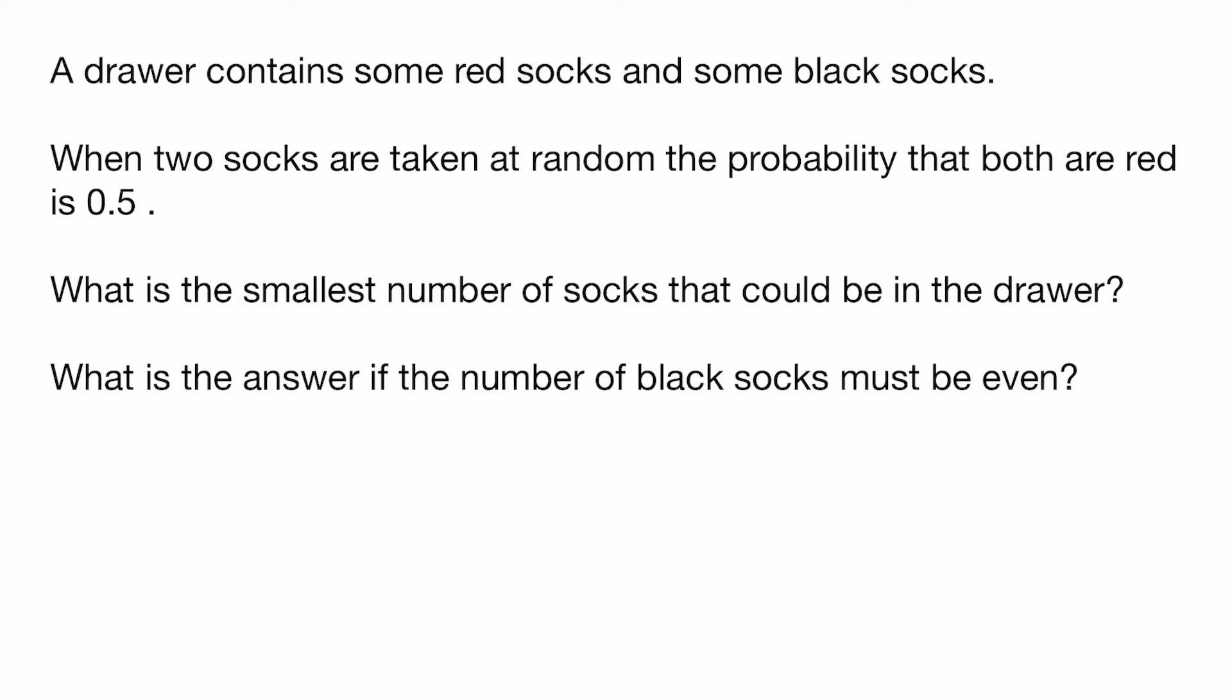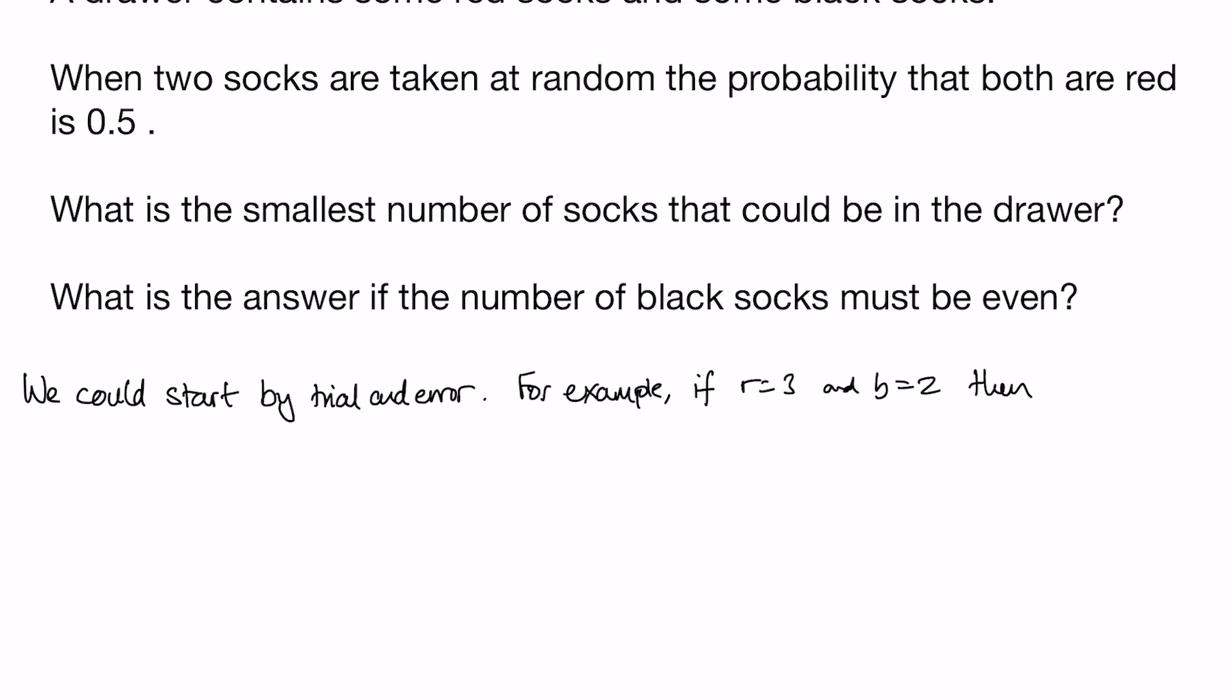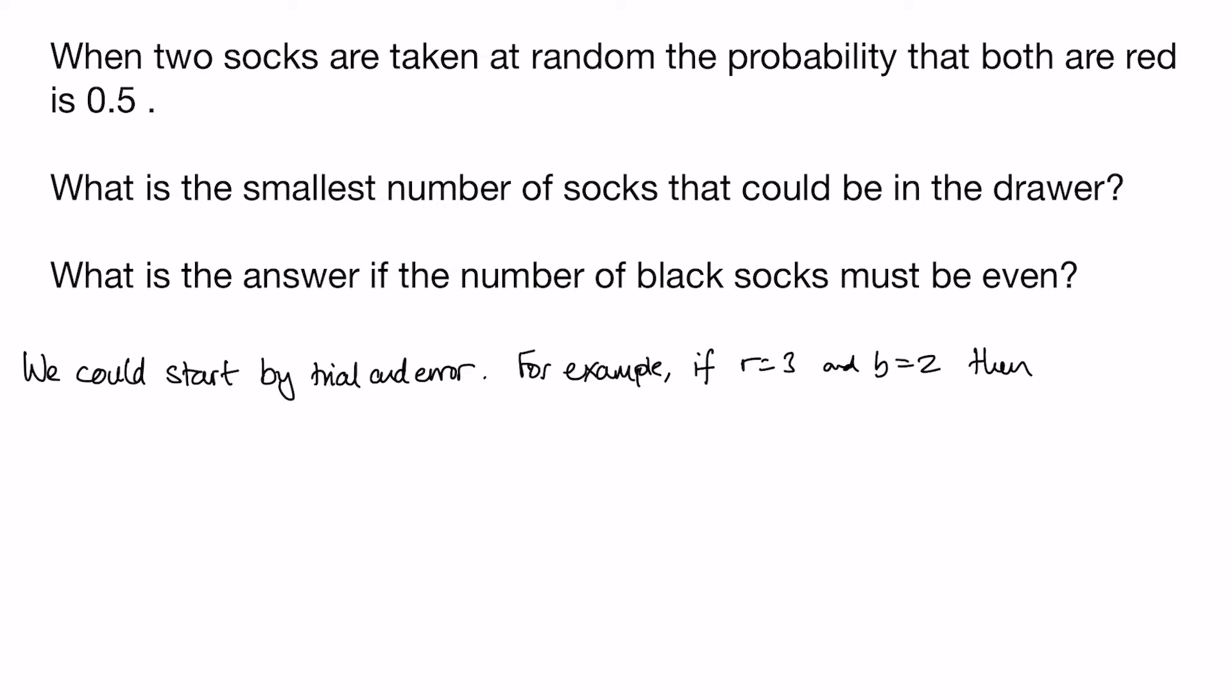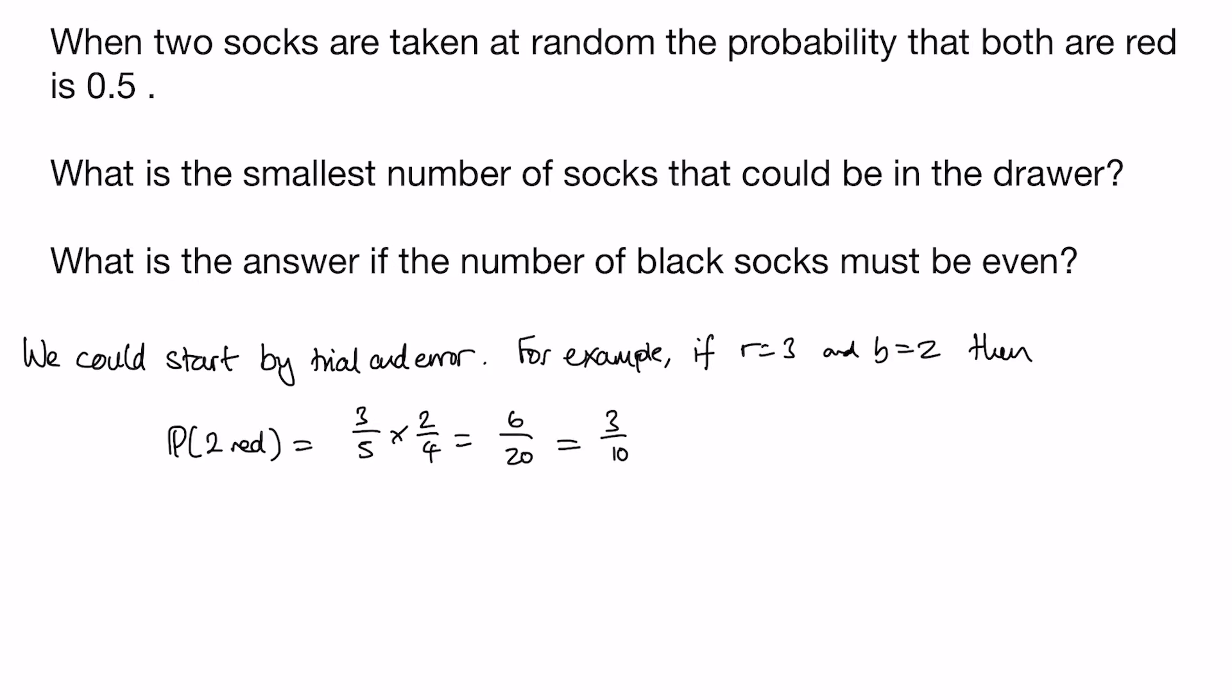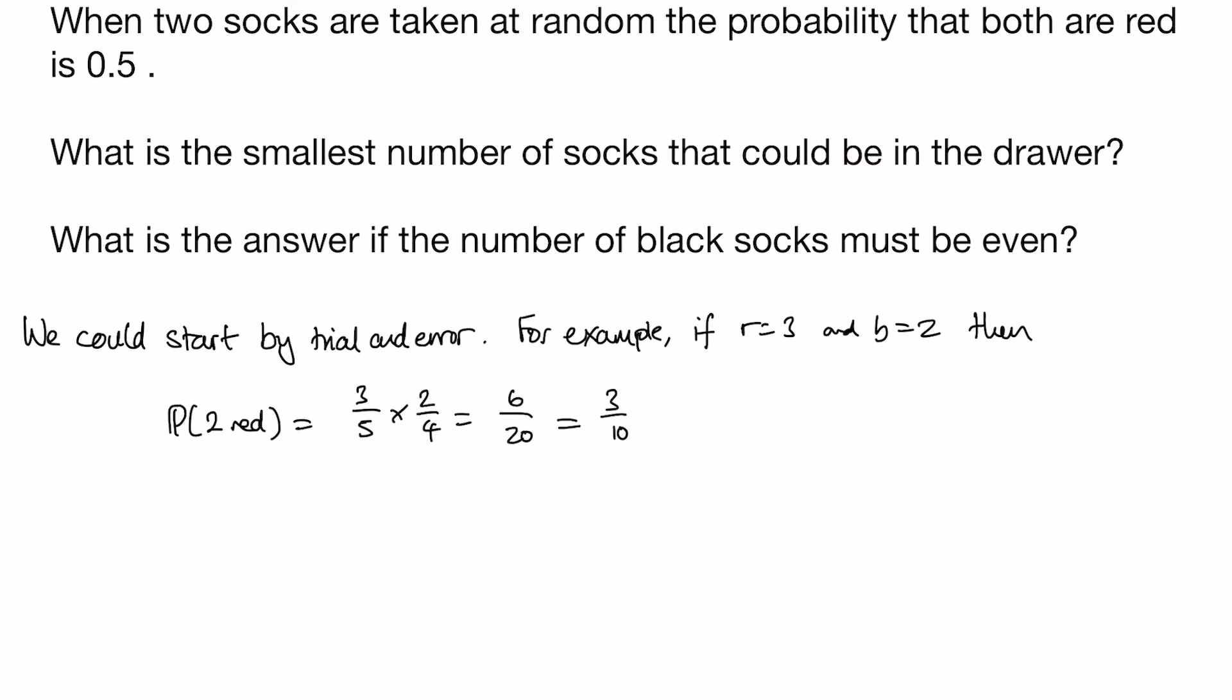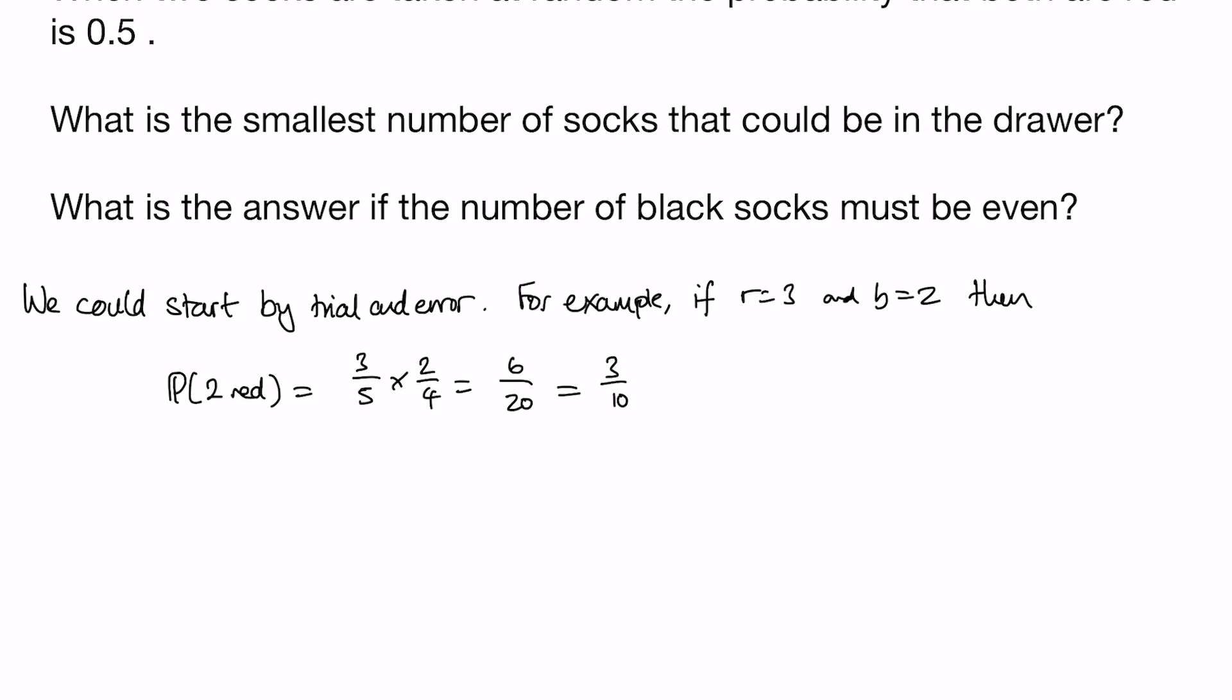We could start by trial and error. For example, if r=3 and b=2, then the probability that we get 2 red is 3/5 × 2/4, because once we've taken one red sock there will be 2 red socks left and only 4 left in total. So that's 6/20 or 3/10.